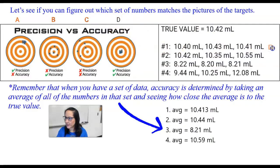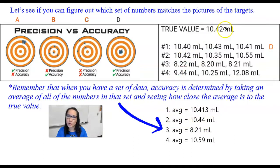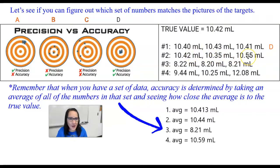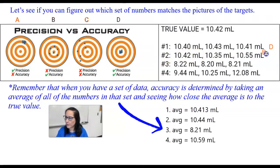So data set one would be letter D. For data set number two, the average is 10.44 milliliters, which is very close to the true value, so we call it accurate. But the measurements — 10.42, 10.35, 10.55 — are not repetitively similar to each other. So this is accurate, but not precise. That's letter B.